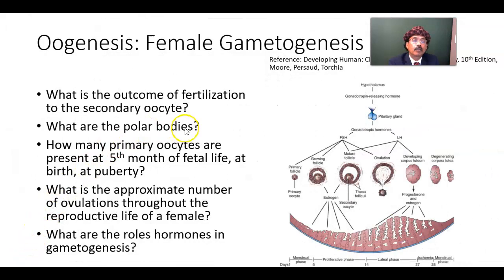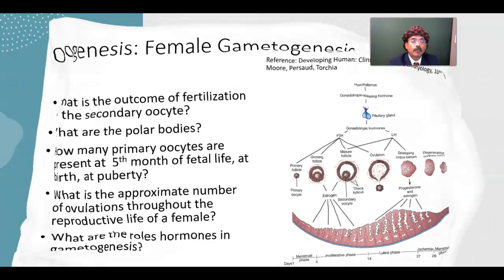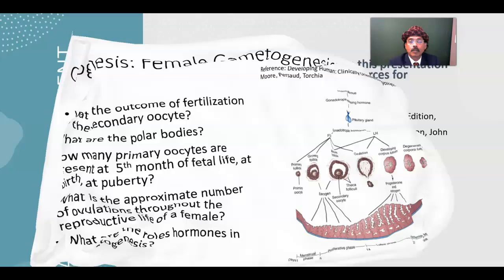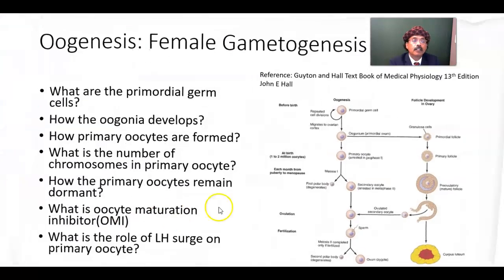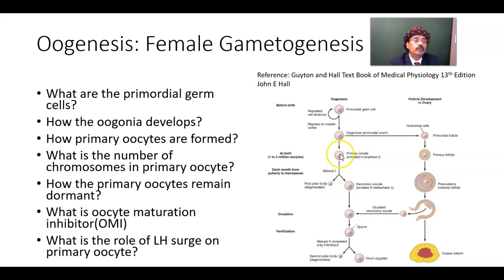What are polar bodies? Polar bodies are small components of the cell — the maturing oogonia cells that contain nuclear material but no cytoplasm. When the primary oocyte divides, one cell becomes the secondary oocyte and the other becomes a polar body with no cytoplasm, and it degenerates. Again, when the second meiotic division is completed, another polar body is formed and it also degenerates — it is just a nucleus with no cytoplasm.